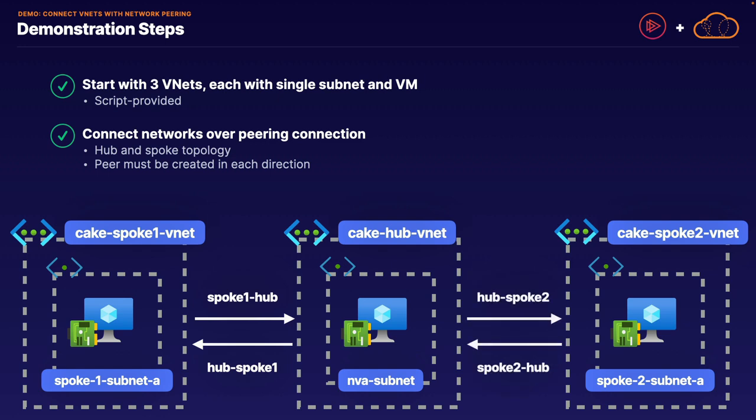By default, assuming you have control over both virtual networks, if you are using the portal, both directional peerings are completed in the same step. Technically it is two separate steps; however, Azure is nice enough to combine them for you.